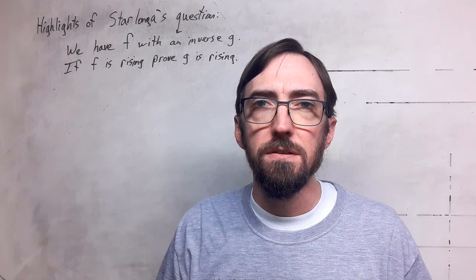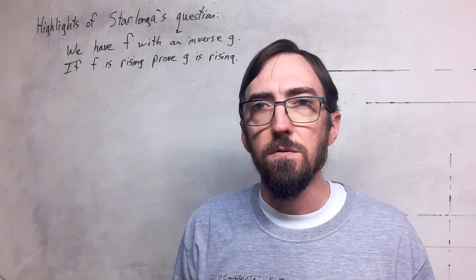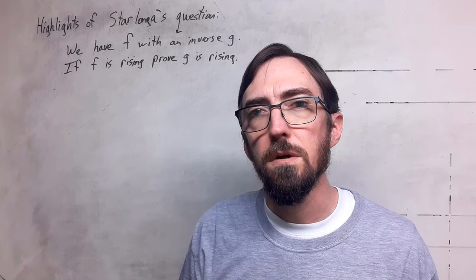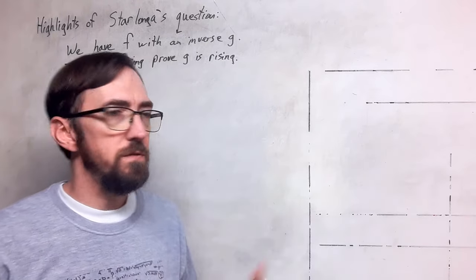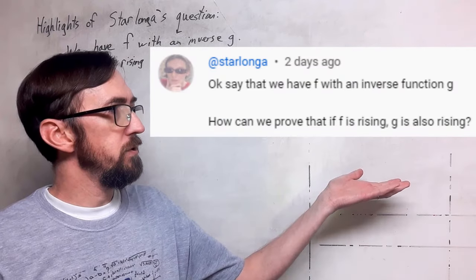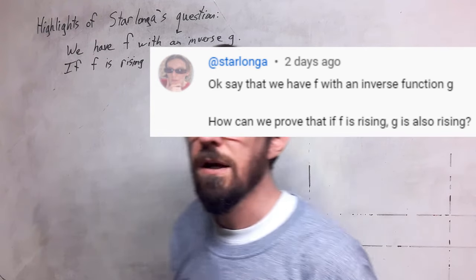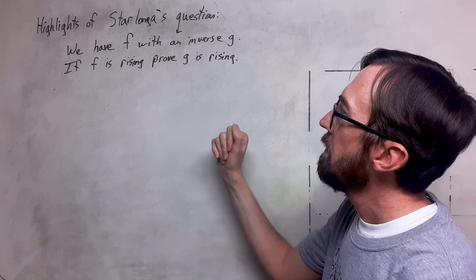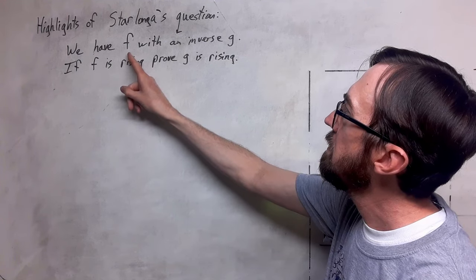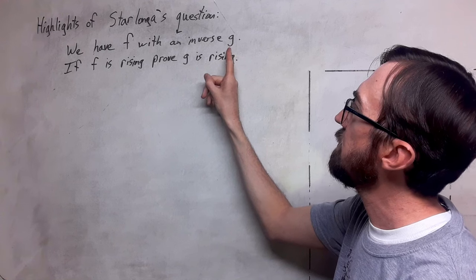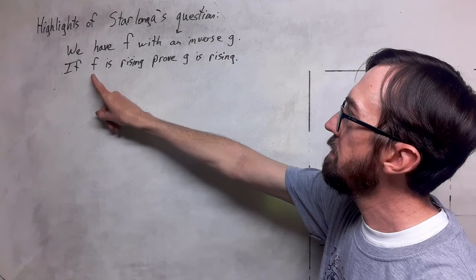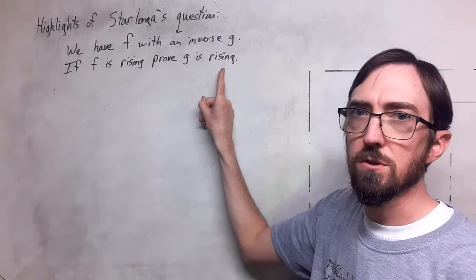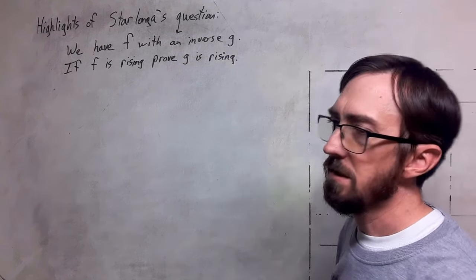Greetings math friends. I have received a comment from a viewer to prove a certain idea and I want to leave over here the original comment. I've pulled out some key ideas from the comment. We have a function f with its inverse g and we want to know that if f is rising, prove g is also rising. So these were the key ideas.